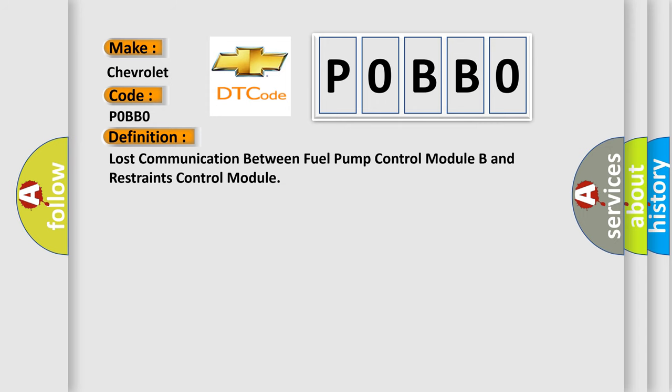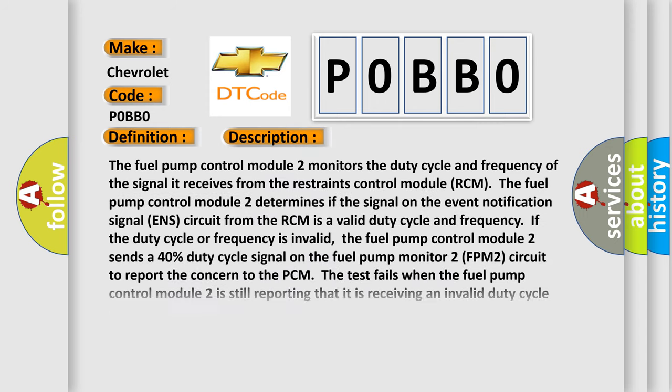The basic definition is: lost communication between fuel pump control module B and restraints control module. The fuel pump control module 2 monitors the duty cycle and frequency of the signal it receives from the restraints control module (RCM). The fuel pump control module 2 determines if the signal on the event notification signal (ENS) circuit from the RCM is a valid duty cycle and frequency. If the duty cycle or frequency is invalid, the fuel pump control module 2 is still reporting that it is receiving an invalid duty cycle or frequency from the RCM after a calibrated amount of time.